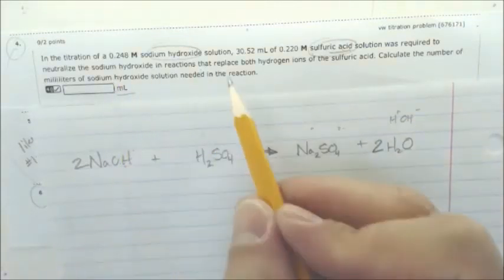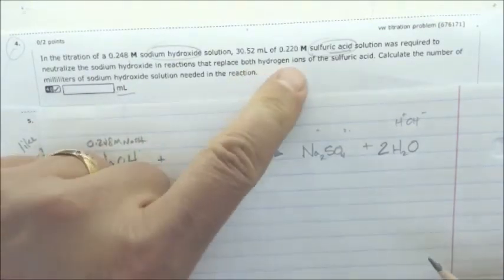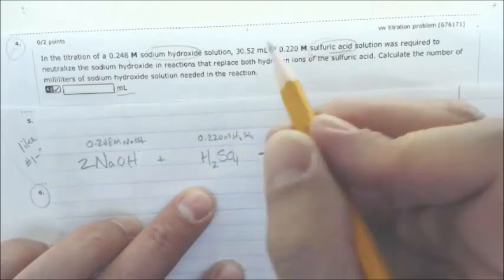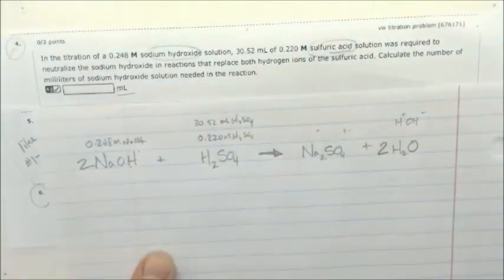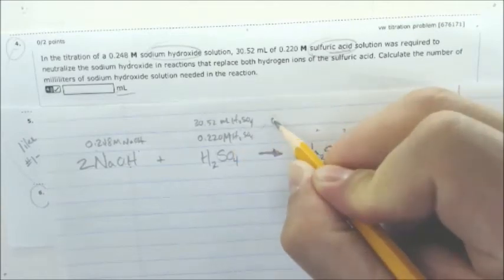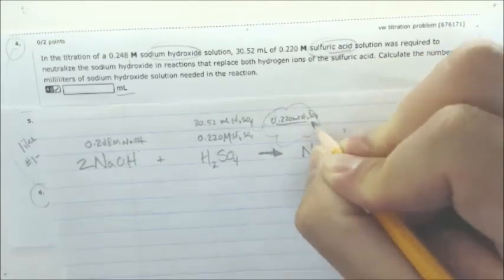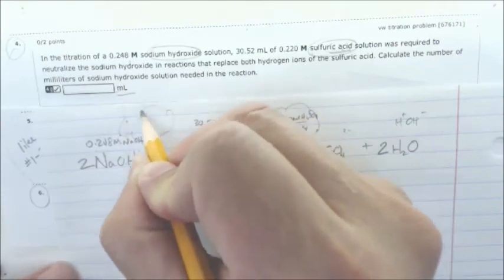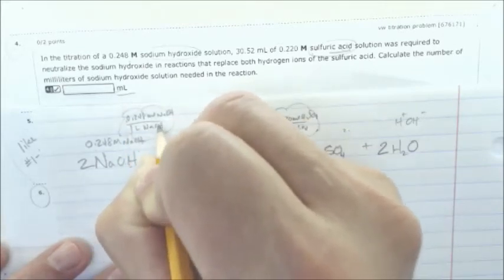Let's take stock of our numbers. We have a concentration of sodium hydroxide of 0.248 molar NaOH. We have a concentration and volume of sulfuric acid: 0.220 molar H₂SO₄ with a volume of 30.52 milliliters of H₂SO₄. Remember, molarities are split units — 0.220 moles of H₂SO₄ per one liter of H₂SO₄ solution, and 0.248 moles of NaOH per one liter of NaOH solution.